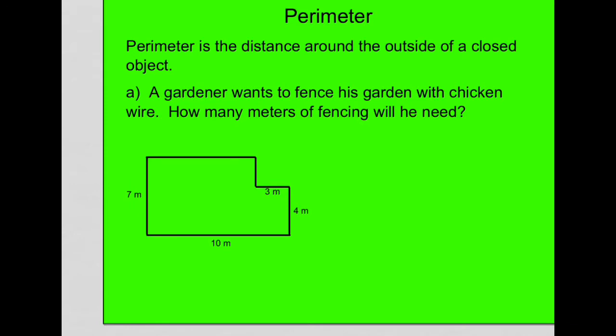Or my family was, and we needed to know the distance around my garden. And that's what perimeter is. Perimeter is the distance around the outside of a closed object. So we were interested in knowing how much fence we'd need to calculate the perimeter of the garden so that we could get the correct amount of chicken wire fence to put around the garden.